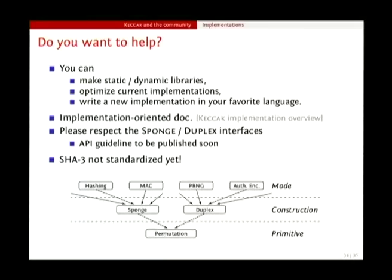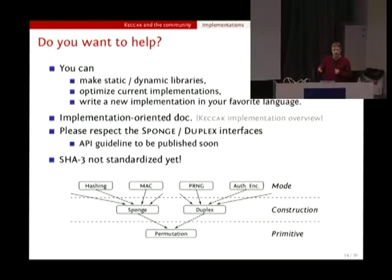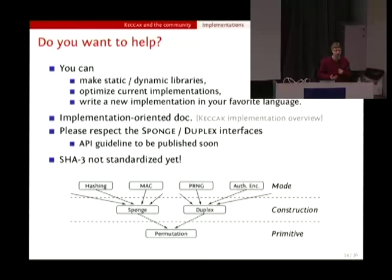Two things about the interface: first, the SHA-3 standard is not out yet. Keccak has been selected as SHA-3, but we don't know exactly what NIST is going to do — we don't expect them to change Keccak in any major way, but there might be little details that make SHA-3 different, or at least SHA-3 might be a subset of Keccak, like AES is a subset of Rijndael. The best way to be future-proof is to stick to the definition of sponge and duplex for a consistent API consistent with our published definitions, since NIST likely won't change that level of abstraction.